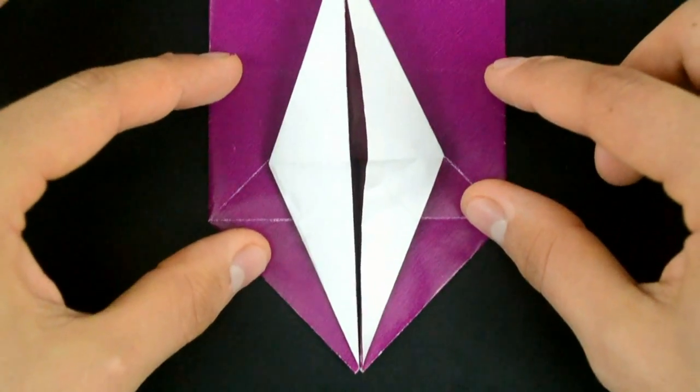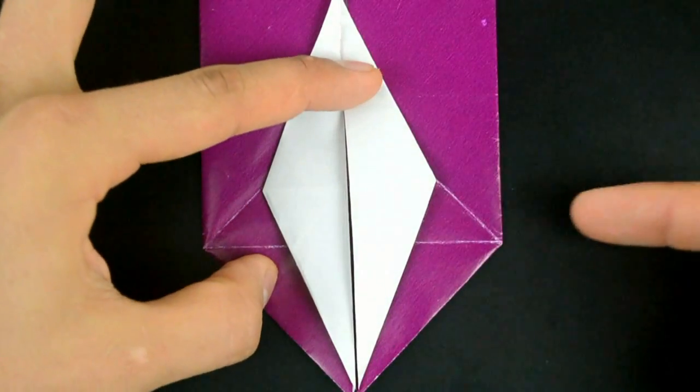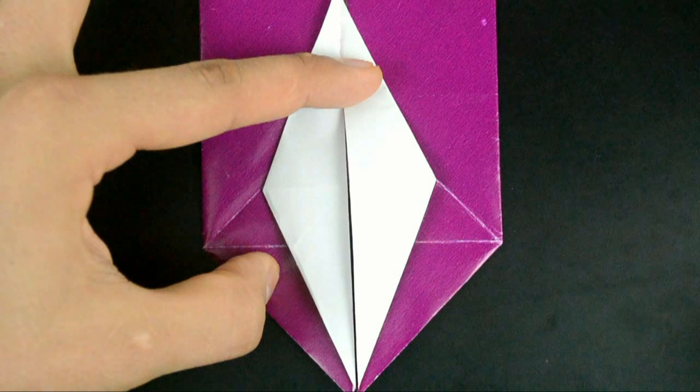To make the next step easier, let's fold these two lower flaps by making two diagonal creases as in this image.